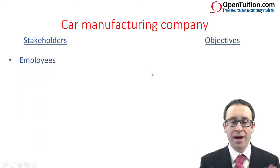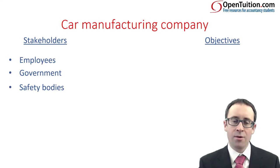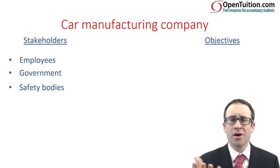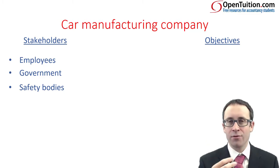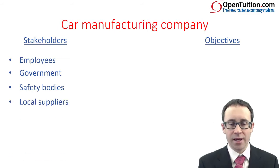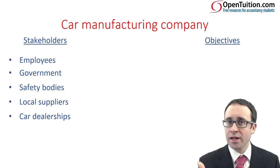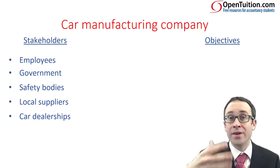Let's have a look at the stakeholders. You've got your employees — nice and straightforward. I threw in the government. I also thought about your safety bodies and regulatory bodies — if you're manufacturing a car, you need to make sure it's safe. I touched upon local suppliers. And instead of just saying customers, I thought about your car dealerships, because that's who you sell your car to if you're a manufacturer, and then the dealer sells it on.